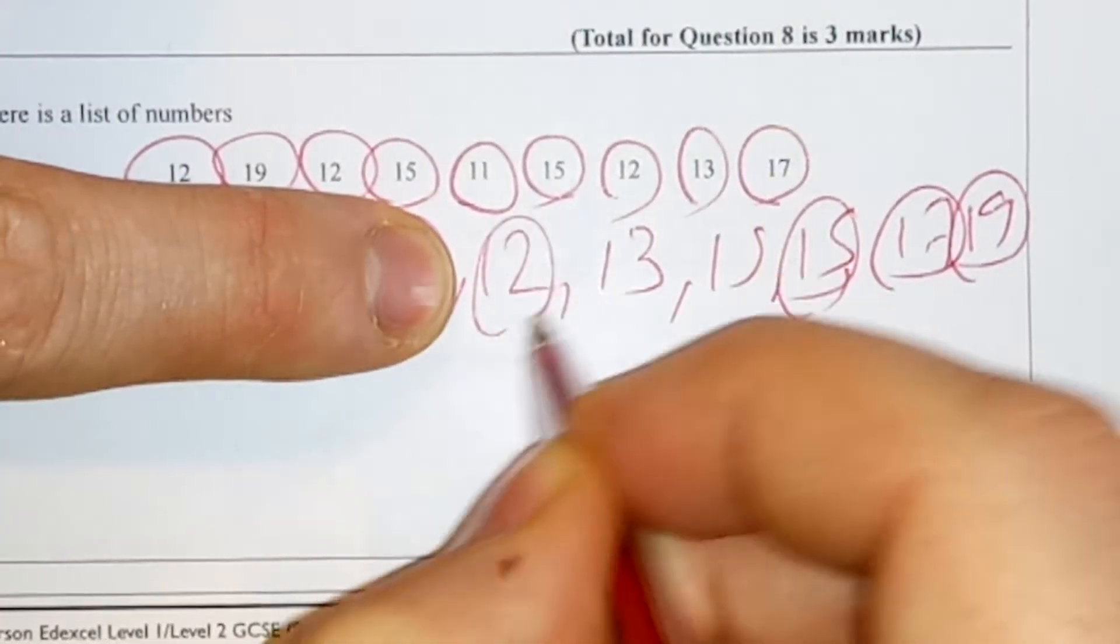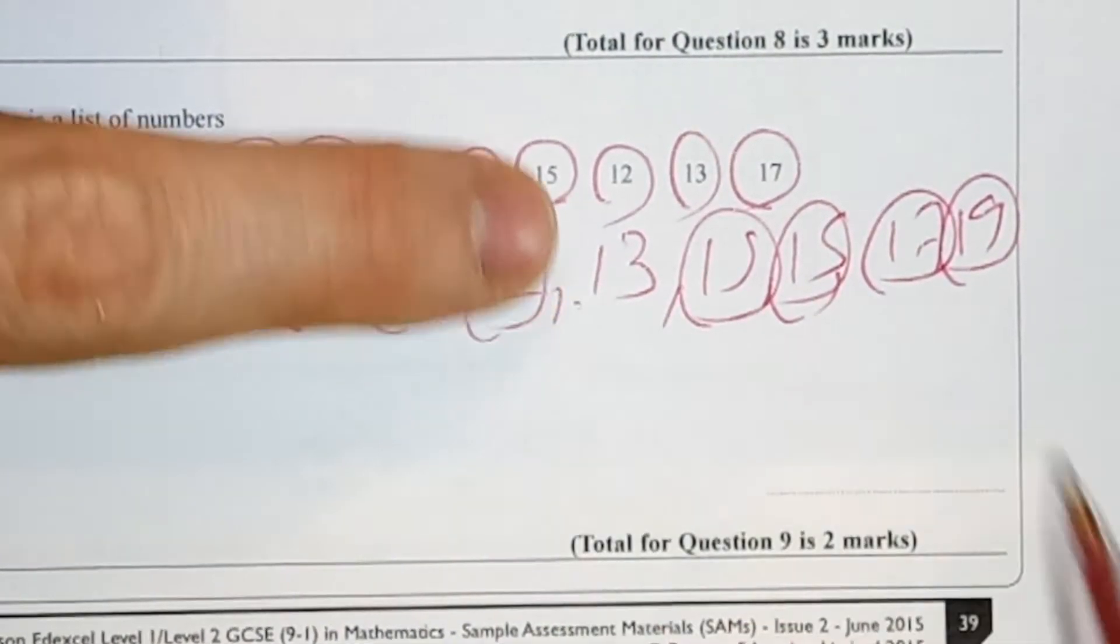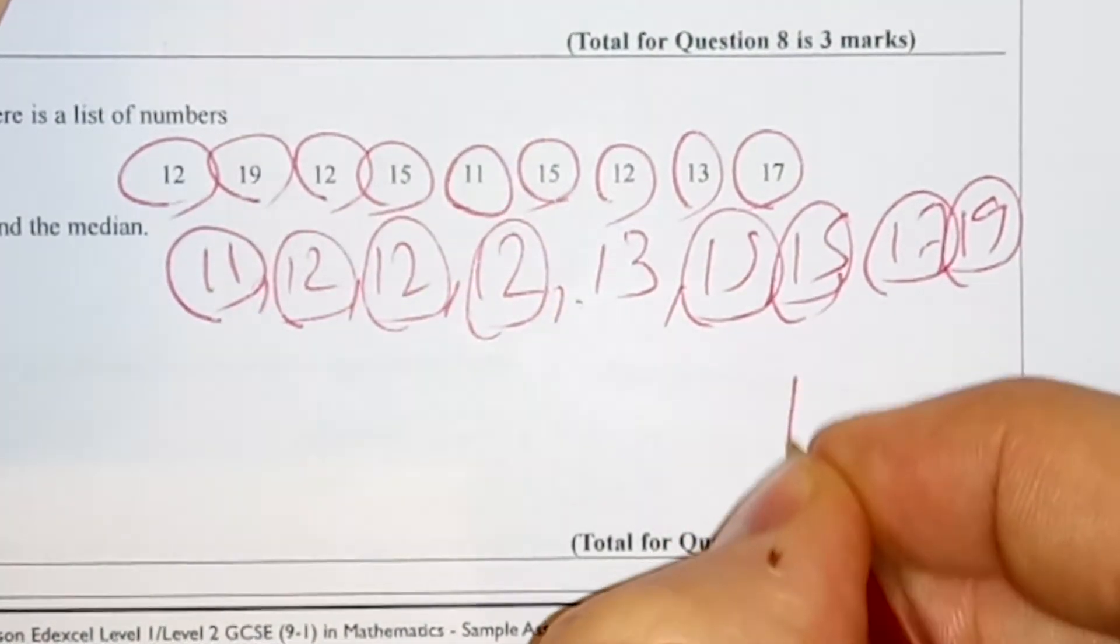Here is a list of numbers. Find the median. So the median is, if you put the numbers in order, it's the middle number. And if there's two middle numbers, you've got to add them up and divide them by two.